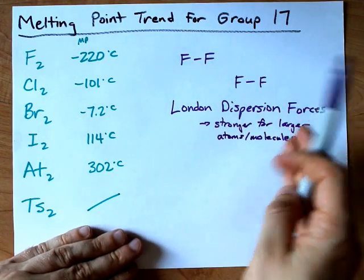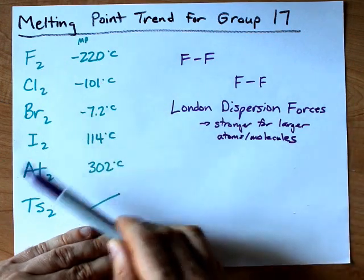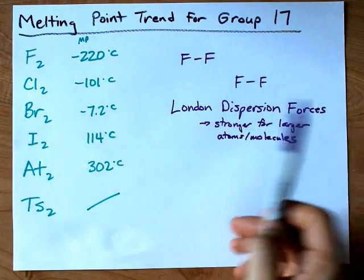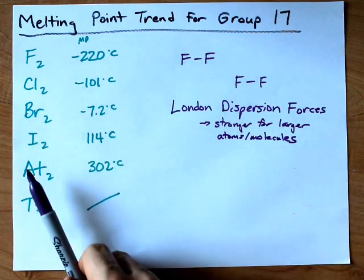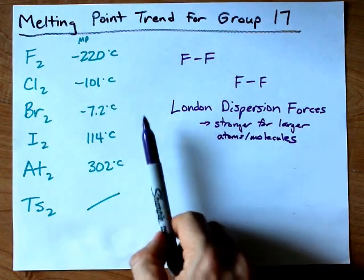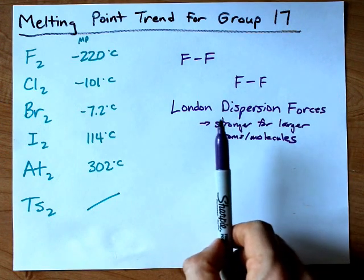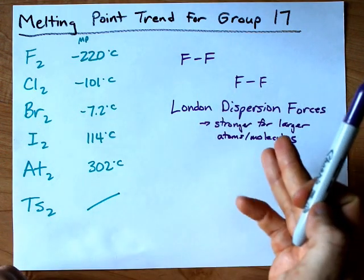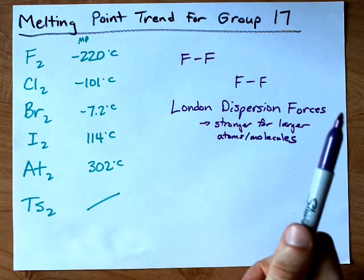And that's it. The boiling points of these also follow this trend for the exact same reason. In order to boil a sample of F2 or Br2, you need to overcome all of the London dispersion forces, and the larger the molecule is, the tougher that will be as well.